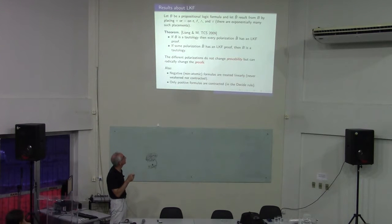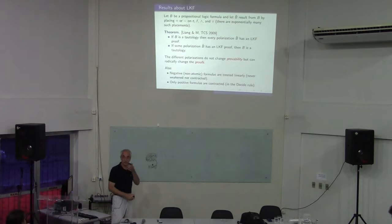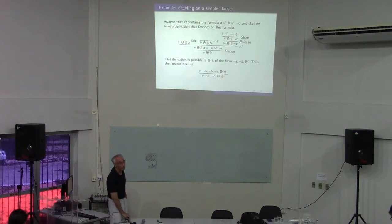I should also comment that negative formulas are treated linearly in the sense of linear logic. A non-atomic linear formula is never weakened, never contracted. This is the only contraction rule - the only place where you can do contraction, and it has to be a positive formula to contract. The only time you weaken something is here. If you follow this through, you don't get negative formulas in that zone. So linear logic is behind some of the refinements here.